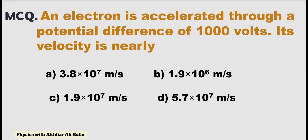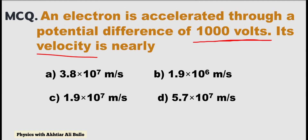An electron is accelerated through a potential difference of 1000 volts. Its velocity is nearly: (A) 3.8×10⁷ m/s, (B) 1.9×10⁶ m/s, (C) 1.9×10⁷ m/s, or (D) 5.7×10⁷ m/s.